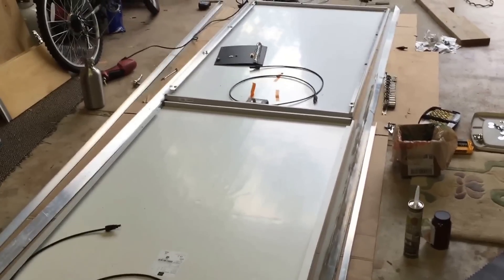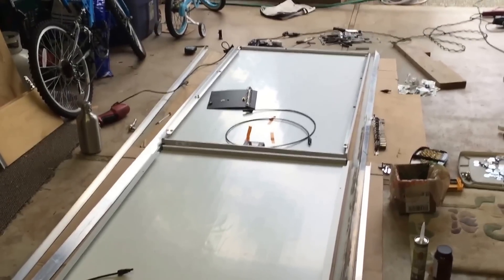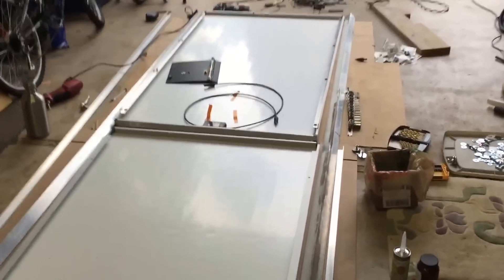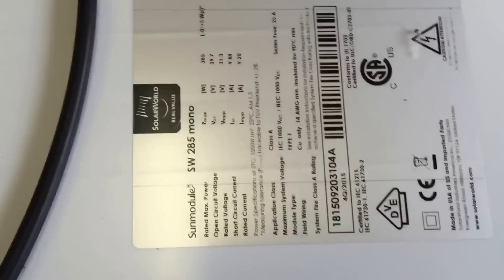Okay, this is Galactify travel conversion part two with installing the solar panels. Here are the two SunWorld 295, no 280 I think, panels right there. That's what they look like on the front and they're upside down right now because we're building up brackets.